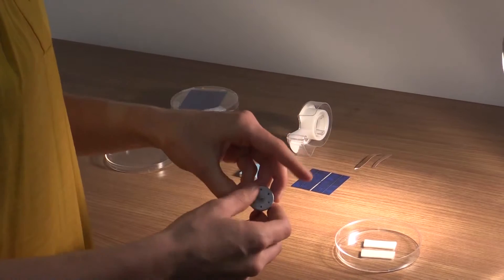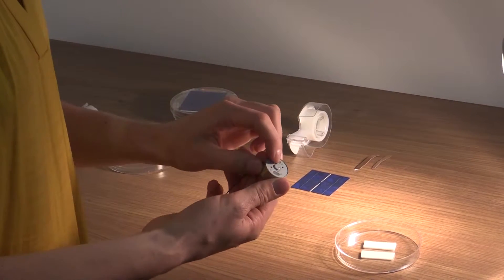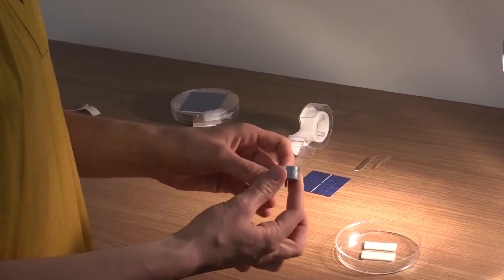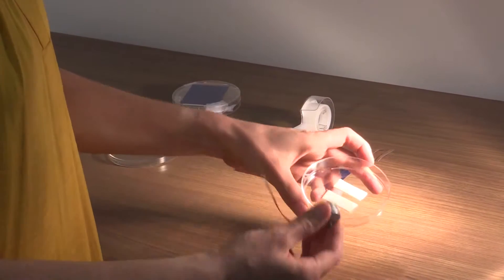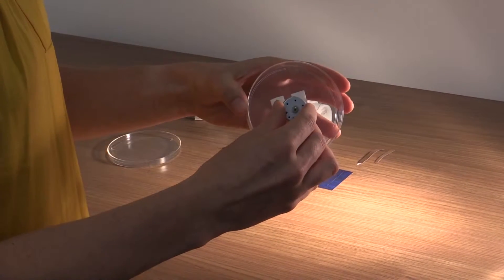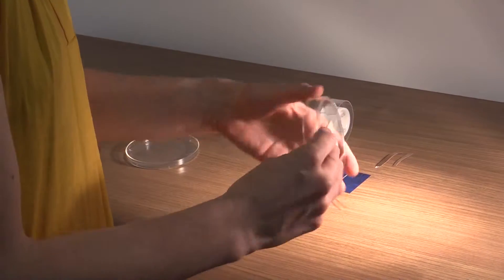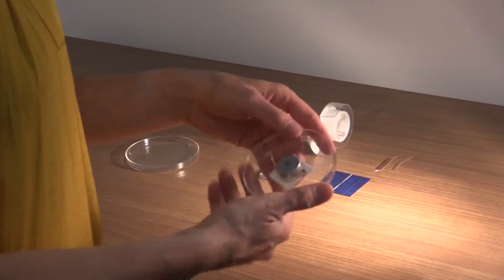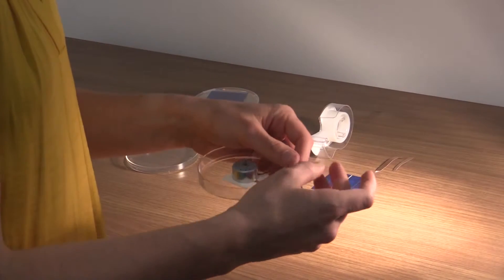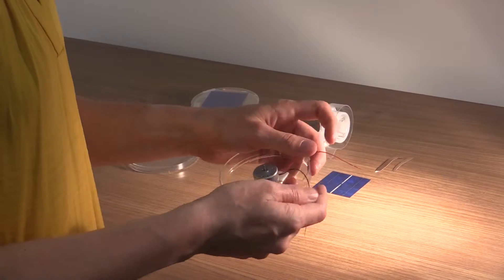Now attach the motor. You'll notice that the motor has a small bump on the back side, and that bump can go between the two pieces of tape so the motor sticks better. At the end, you should be able to gently shake your dish and the motor should still be firmly attached.